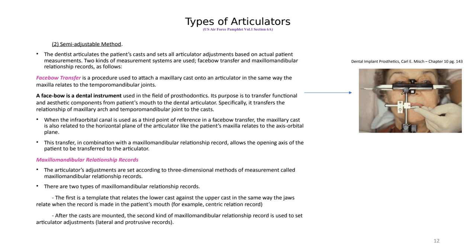Maxillomandibular relationship records. The articulator adjustments are set according to three-dimensional measurement methods called maxillomandibular relationship records. There are two types: the first is a template that relates the lower cast against the upper in the same way the jaw relates when the record is made in the patient's mouth — for example, centric relation. After the casts are mounted, the second type is used to set articulator adjustments: the lateral and protrusion records.